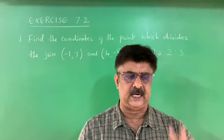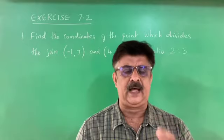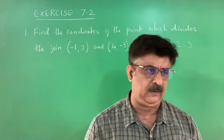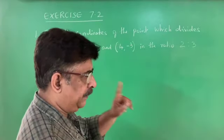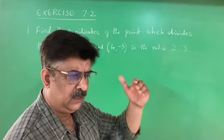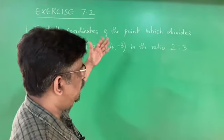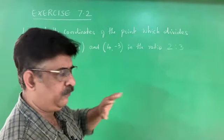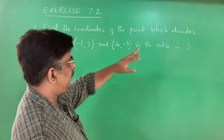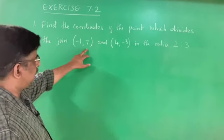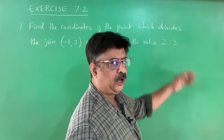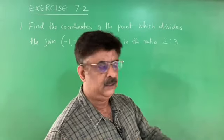Right now we are in Exercise 7.2. This exercise is based on the midpoint formula and the section formula. I repeat — all problems of coordinate geometry are important because all problems are based on formula. The first problem: find the coordinates of the point which divides the join of (minus 1, 7) and (4, minus 3) in the ratio 2 is to 3. Since the ratio is 2 is to 3 and not 1 is to 1, this is not a midpoint formula problem — it is a section formula problem.